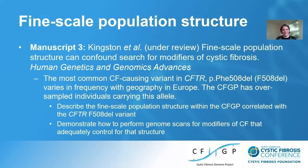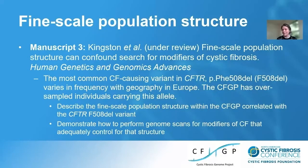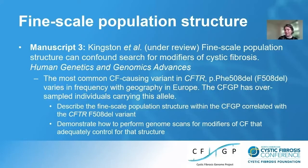The third vignette digs into fine-scale population structure within the dataset, summarized in Kingston et al., currently under review with Human Genetics and Genomics Advances. The most common CF-causing variant in CFTR is F508del, which varies in allele frequency along a geographic cline in Europe. The CFGP has oversampled individuals with F508del — 80-something percent of the sample was homozygous for it. The concern is whether we've also oversampled other variants across the genome associated with that geographic cline, which could confound later genome scans for modifiers.